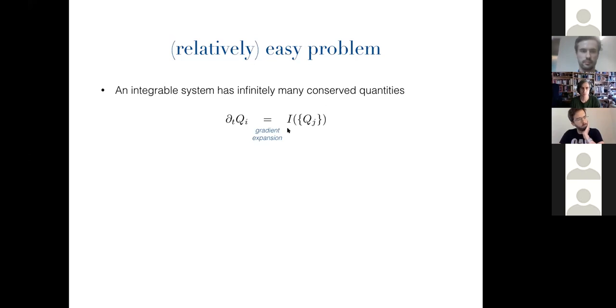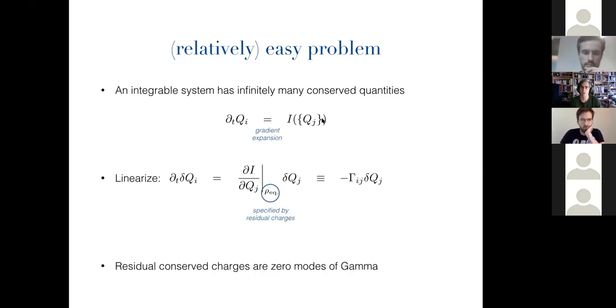But on the other hand, we're thinking about slowly varying hydrodynamic sorts of fluctuations. And so you can say it depends on all of those things through a gradient expansion. And at leading order, it depends on the set of all the other charges in the system. Because again, you're sort of locally looking at a homogeneous state. Okay, in general, this is some nonlinear function, it's kind of useless. But you can always linearize about an equilibrium state. And if you linearize, you get a matrix equation, where you have this matrix gamma_ij that sets the rates at which charges relax.